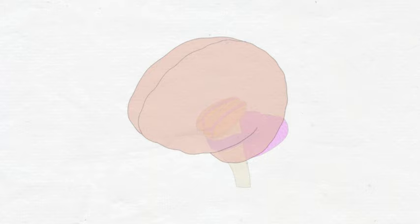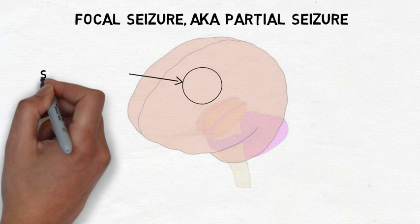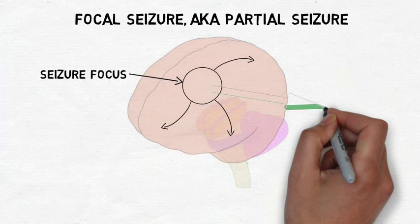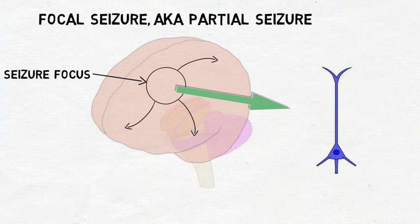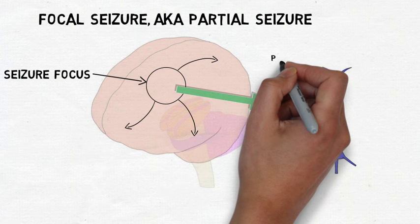In seizures called focal seizures, this excessive activity begins in one specific area of the brain called the seizure focus, but it can also propagate to other areas of the brain. Neurons that are in the seizure focus experience a large and long-lasting depolarization, followed by the firing of a train of action potentials. This abnormal activity is referred to as a paroxysmal depolarizing shift.